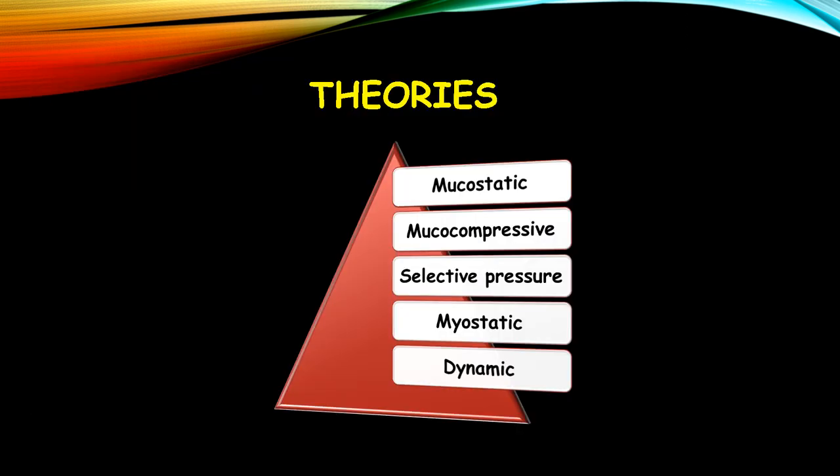Coming to the theories of impression making, there are mainly five theories. They are mucostatic, mucocompressive, selective pressure, myostatic, and dynamic theories.